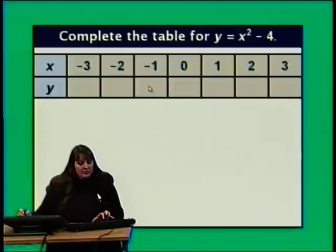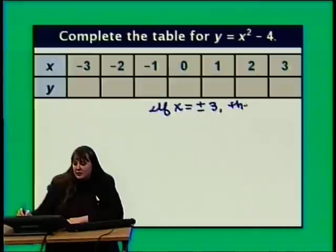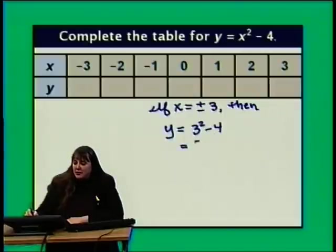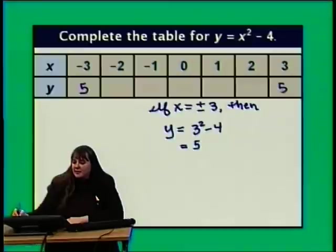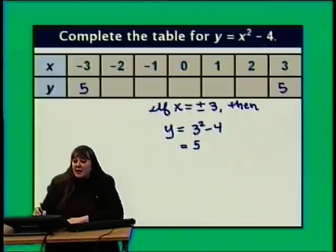Starting with x equals plus or minus 3: y is 3 squared minus 4, that's 9 minus 4, which is 5. So whether x is positive 3 or negative 3, y is 5. What about x equals negative 2 or positive 2? Whether we square negative 2 or positive 2, we get 4, and 4 minus 4 is 0. So whether x is negative 2 or positive 2, y is 0.